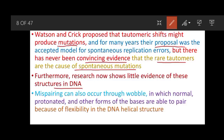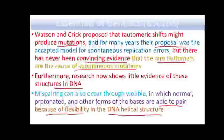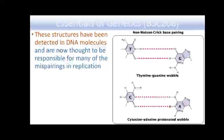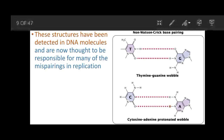Mispairing can also occur through wobble, in which normal, protonated, and other forms of bases are not able to pair correctly because of flexibility in the DNA helical structure. In non-Watson-Crick base pairing, thymine pairs with guanine and cytosine pairs with adenine. These structures have been detected in DNA molecules and are now thought to be responsible for many of the mispairings in replication.